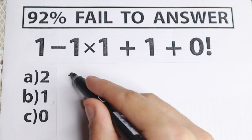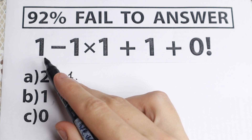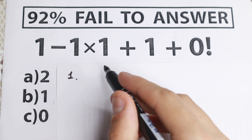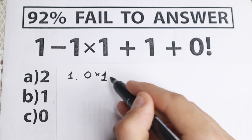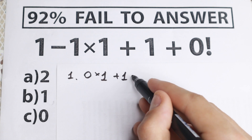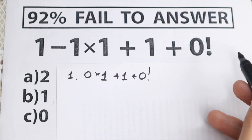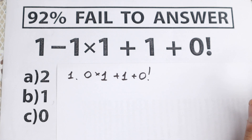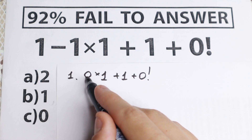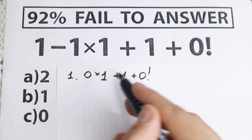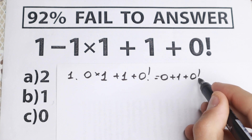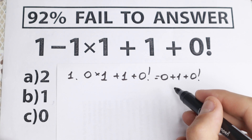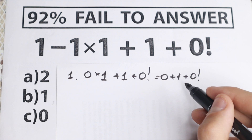As you can see, a lot of students start with the subtraction. They say 1 minus 1 is equal to 0, then times 1, plus 1 and plus 0 factorial. This is the first and the wrong way — because we get 0 times 1 equal to 0, so we end up with 0 plus 1 plus 0 factorial.